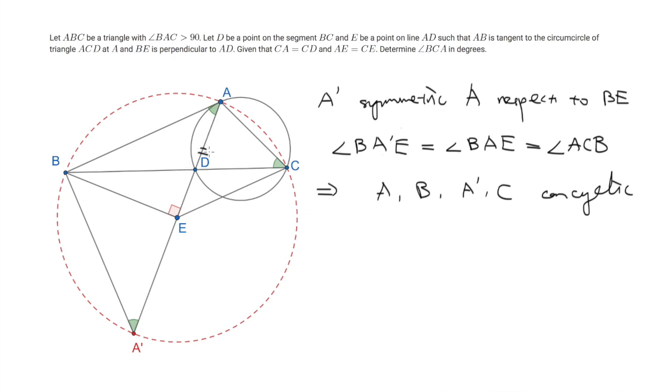Now we mark that AE equals CE. And by symmetry A'E is also equal to AE. So indeed E is equal distance to the three points A, C and A'. And this means that E is the center of the circumcircle ACA'. Now since B also lies on this circle, E is indeed the center of the entire circle.